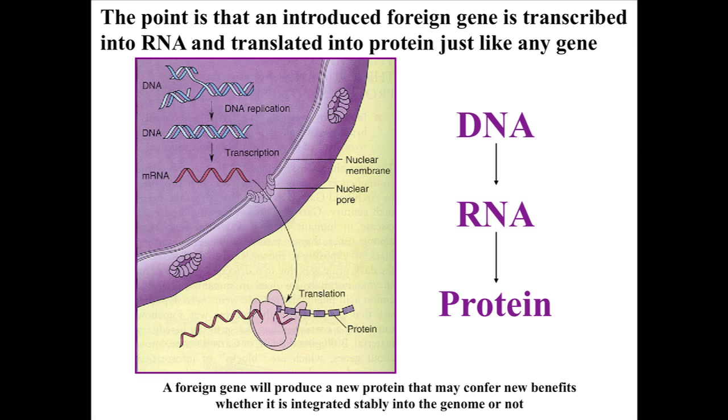A foreign gene will produce a new protein, conferring the benefits of that gene's expression whether it is integrated stably into the genome or not. Transient expression might be an application for cystic fibrosis, which is a problem with epithelial cells in the lung. Could you aerosol-deliver the correct gene through liposomes, which could fuse with those cells, transiently express the correct protein, and then by reapplication — once those cells sloughed off — replenish the cells and diminish the symptomology?